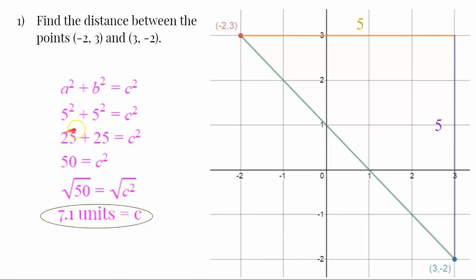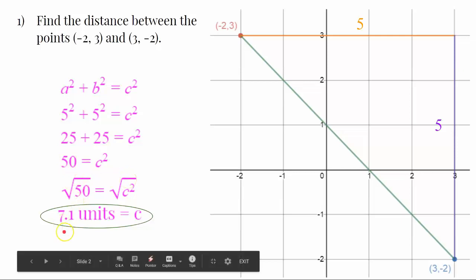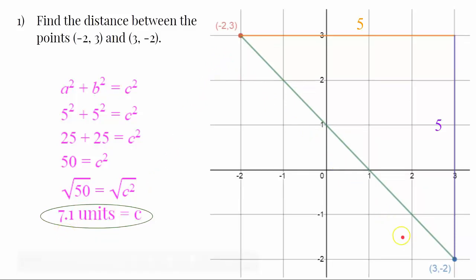5 squared is 25. 25 plus 25 is 50. Take the square root of both sides, and we round to the nearest tenth, finding that this green line, the hypotenuse, the distance between the two points, is 7.1 units.